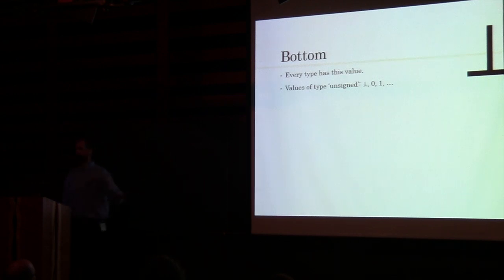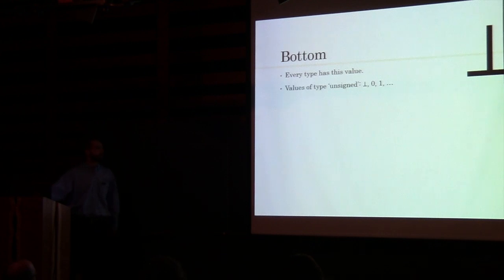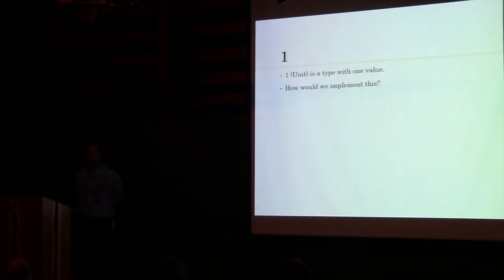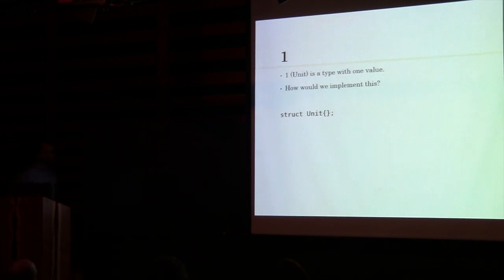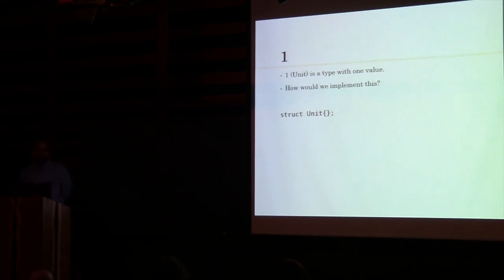We're just going to keep on going and know that every type can have this bottom value — it's necessary if you want to have sound mathematics. So now we have the unit type — a type with one value. How would we implement that? A struct without the delete. This type has one value. There's no way that you can create a different kind of unit — it only has exactly one value.